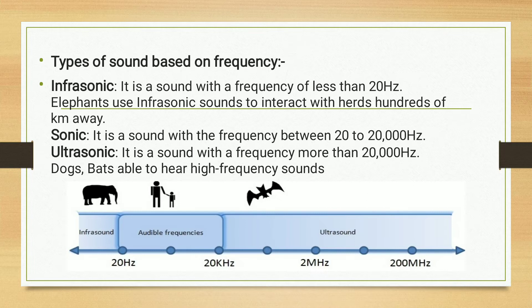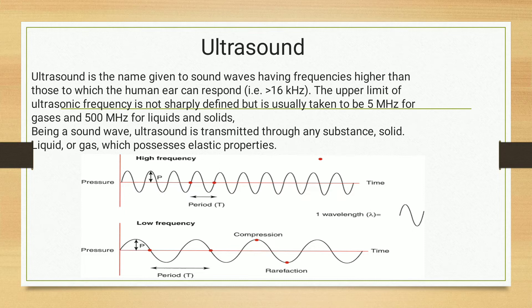Dogs and bats are able to hear high-frequency sounds. We have already discussed the range of ultrasound, but the upper limit of ultrasonic frequency is not sharply defined but is usually taken to be 5 megahertz for gases and 500 megahertz for liquids and solids. Ultrasound can be transmitted through any substance, solid, liquid, or gas, which possesses elastic properties.